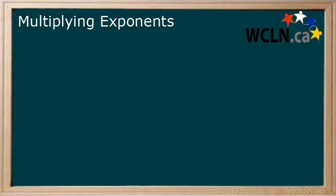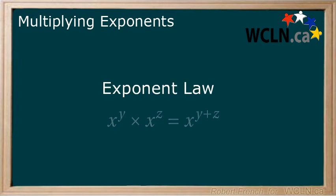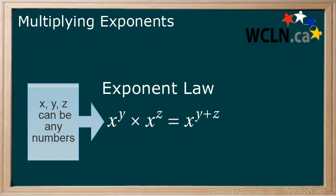This brings us to the following exponent law. x to the power of y multiplied by x to the power of z is equal to x to the power of y plus z.